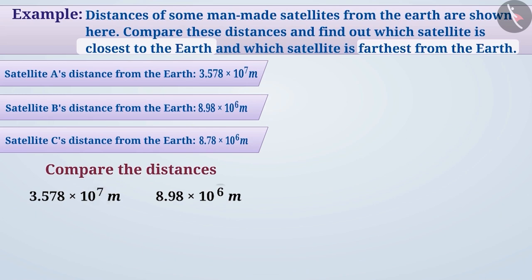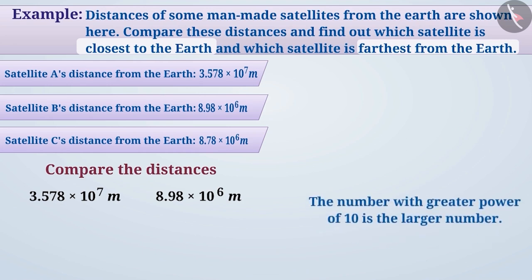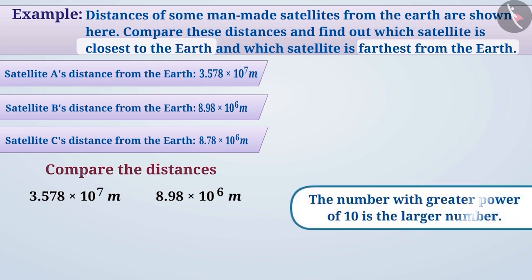In the first number, the power of 10 is 7, whereas in the second number, the power of 10 is 6. In such a situation, we can say that the number with the greater power of 10 is the larger number. Therefore, 3.578 × 10 to the power of 7 metres is greater than 8.98 × 10 to the power of 6 metres.